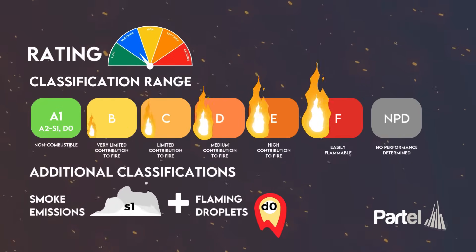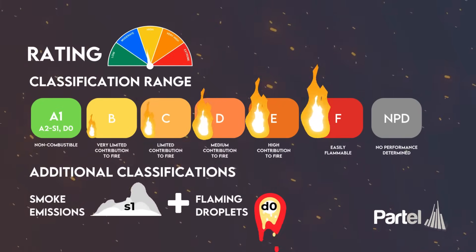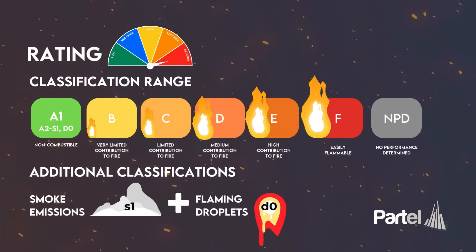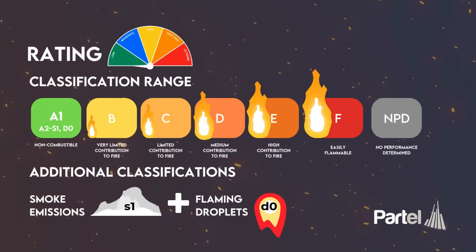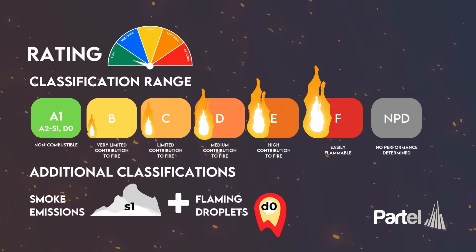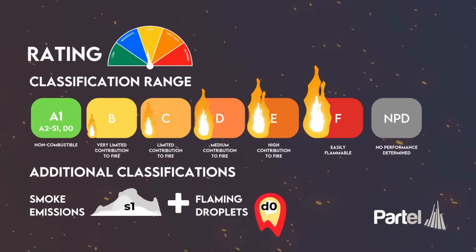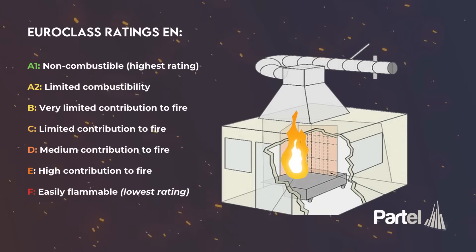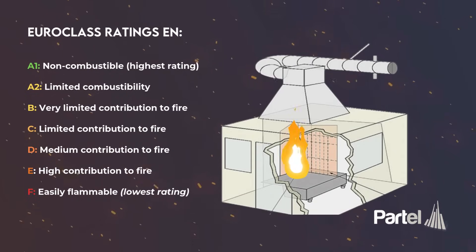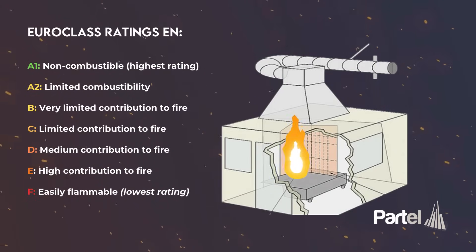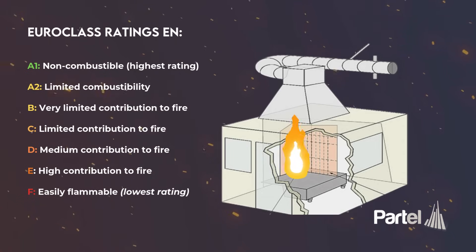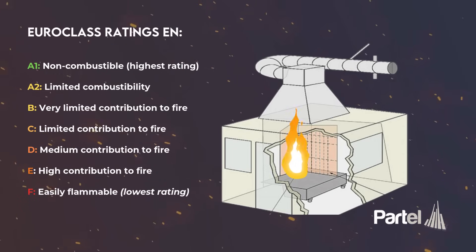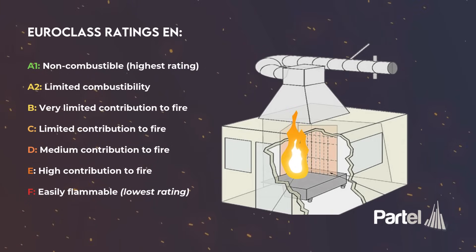Fire rating is the performance of a material when subjected to fire. Materials are given a classification from A to F, with additional classifications for smoke emissions and flaming droplets. The A to F classification defines a product's contribution to fire, with A1 meaning no contribution, all the way to F which is extremely flammable.